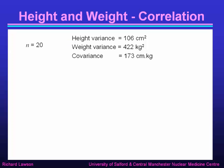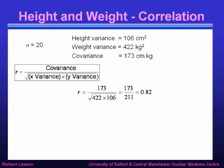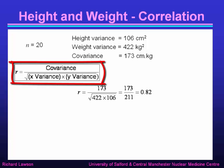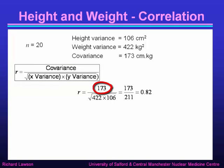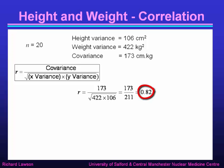To summarize: we have a height variance of 106 cm², a weight variance of 422 kg², and a covariance of 173 cm·kg. The correlation coefficient r is defined as the covariance divided by the geometric mean of the x and y variances. So r = 173 ÷ √(422 × 106) = 173 ÷ 211 = 0.82. That is our correlation coefficient.